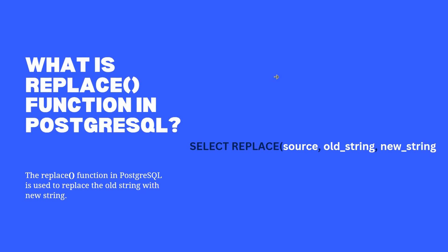The replace function in PostgreSQL is used to replace an old string with a new string. Looking at the syntax, after the SELECT statement, use the function replace that accepts three parameters: source, old string, and new string. Source is the source string where the old string will be searched. The old string is what gets searched in the source string, and the new string is what replaces the old string.